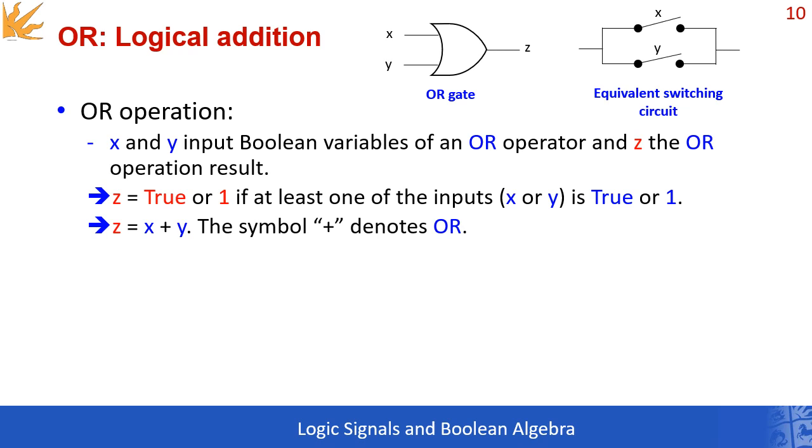Let's focus on the OR operation, also called logical addition. If x and y are input variables of an OR operation and z is the result, then z as an output is true if at least one of the two inputs is true.